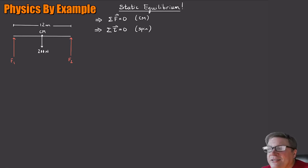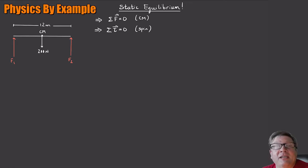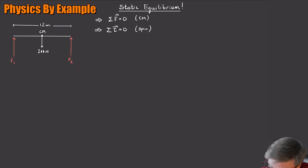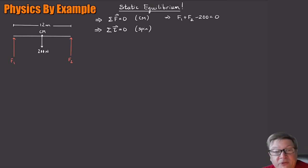Just looking at this problem, you might think it's super easy — F1 and F2 are both going to be 100, and we're done. That's true, but we're going to use the formalism, get that answer, and then expand to some interesting cases that maybe aren't so obvious. So let's do the obvious case to make sure everything works. The sum of the forces equals zero. I have F1 and F2 acting up, so F1 plus F2, and then minus 200 equals zero, everything in newtons.